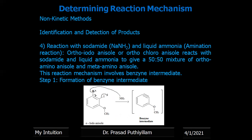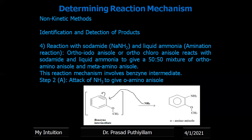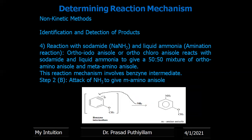The reaction mechanism involves benzyne as an intermediate and can be split into step 1 and step 2. In step 1, benzyne intermediate formation takes place: sodamide (NaNH₂) ionizes to give Na⁺ and NH₂⁻. The NH₂⁻ removes a proton from the benzene ring, and the subsequent removal of the halide (iodide) gives the corresponding benzyne intermediate. In step 2, the attack of NH₃ on the benzyne intermediate can occur at two positions — one giving ortho-aminoanisole and the other giving meta-aminoanisole — explaining the 50:50 mixture.